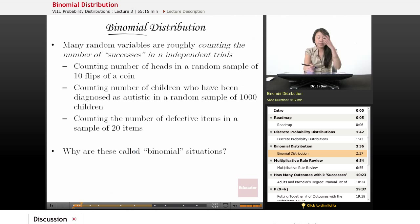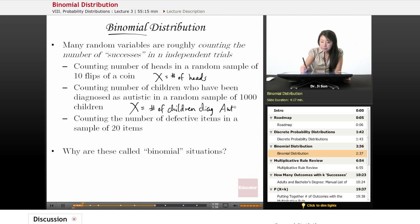Just to give you examples, it might be counting the number of heads in a random sample of 10 flips of the coin. So here the random variable X is the number of heads. Another example is counting the number of children who have been diagnosed as autistic in a random sample of 1,000 children. So in this case, the random variable X is the number of children diagnosed with autism.